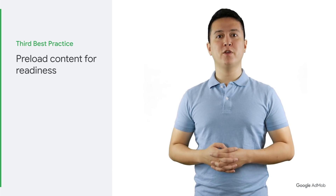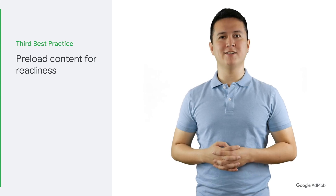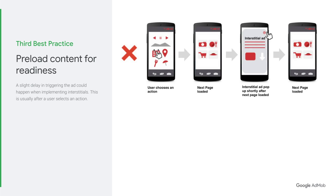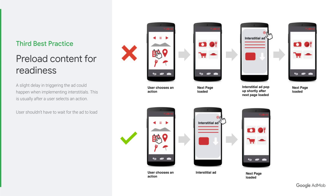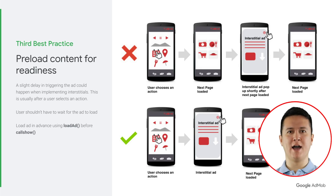Third best practice: ensure you preload your app content for readiness. Typically, a slight delay in triggering the ad could happen when implementing interstitials, usually after a user selects an action. Just as it is important to display interstitial ads at an appropriate time, it is also important to make sure the user doesn't have to wait for them to load. Loading the ad in advance by calling load ad before you intend to call show can ensure your app has a fully loaded interstitial ad ready when needed. Preloading your interstitial ads will allow you to avoid latency when displaying ads.